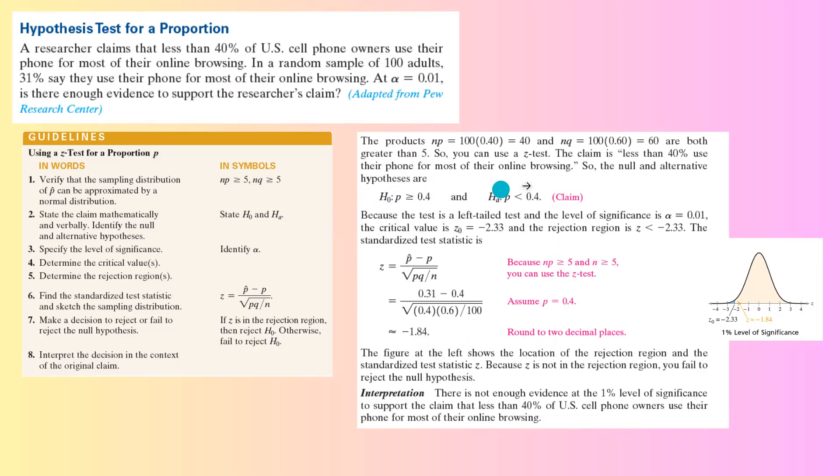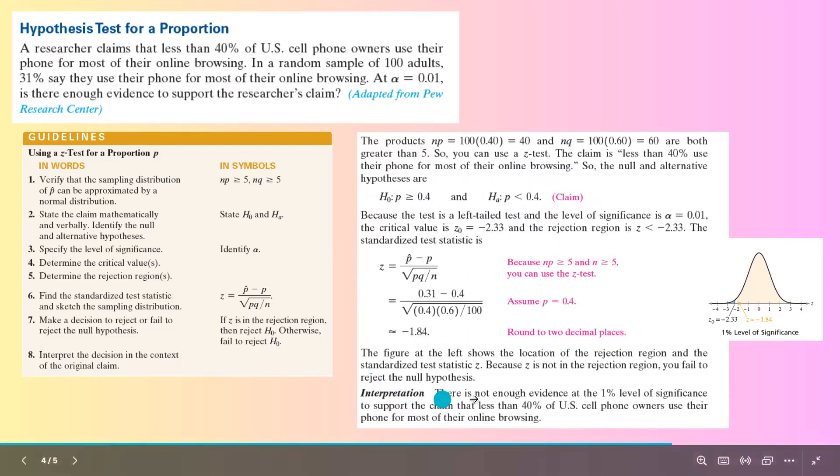When you support the null, it means that you reject the alternative. In this example, claim and alternative are the same thing. So we are rejecting the researcher's claim. There is not enough evidence at 1% level of significance to support the claim that less than 40% of U.S. cell phone owners use their phone for most of their online browsing.